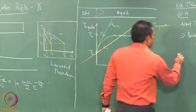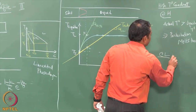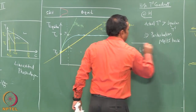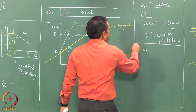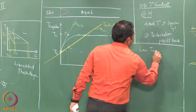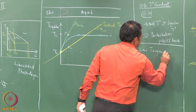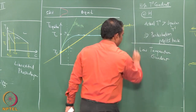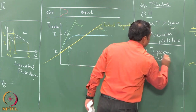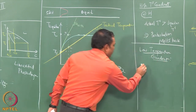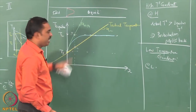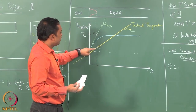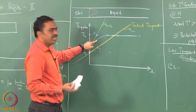We can inspect the situation at L and see what would happen — this represents low temperature gradient. With a low temperature gradient, at point L the perturbation has accidentally found itself at a temperature which is below the liquidus.